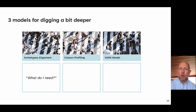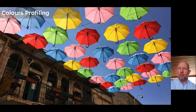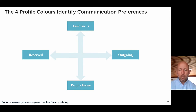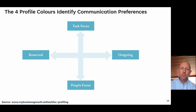So let's move on to our next model: colours profiling. Colours profiling comes out of the personal development space and has been around for quite a while. Like archetypes, we can plot it on a two-by-two — but whilst archetypes talks about need states, colours profiling is about communication preferences: how do I like to communicate and how do I like to be communicated with? We all sit on a matrix of task-focused versus people-focused on one axis, and reserved versus outgoing on the other.